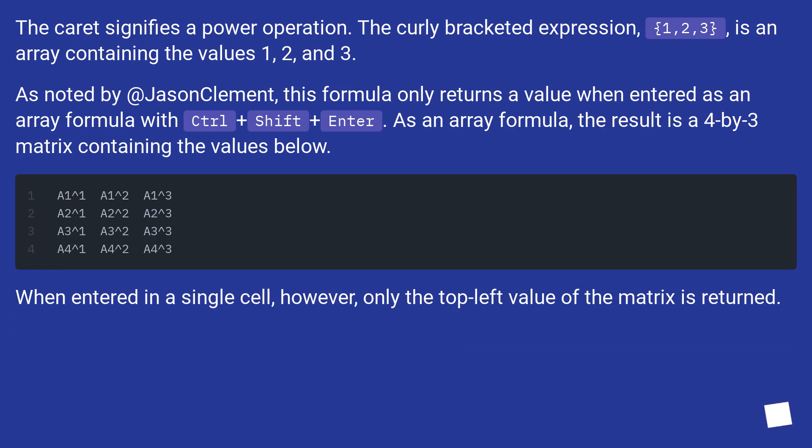As noted by Jason Clement, this formula only returns a value when entered as an array formula with Ctrl+Shift+Enter. As an array formula, the result is a 4 by 3 matrix containing the values below. When entered in a single cell, however, only the top left value of the matrix is returned.